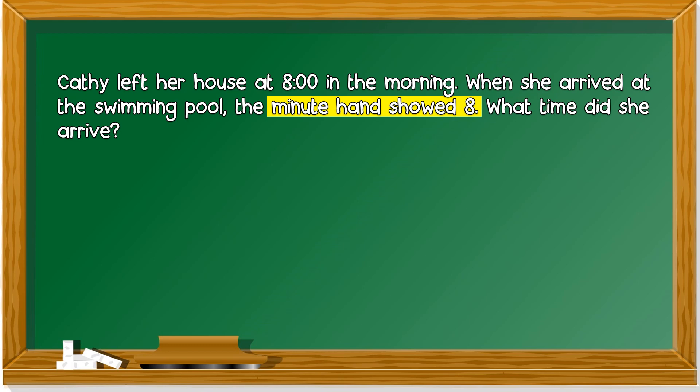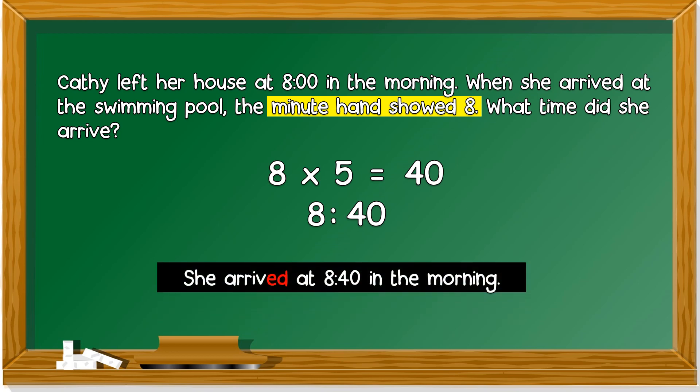The minute hand is at 8. 8 times 5 is 40. You have to remember your multiplication of 5. 8 times 5 is 40, so 40 minutes after 8 is 8:40. She arrived at 8:40 in the morning.